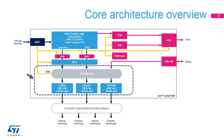One of the outputs of the Cortex-M4's bus matrix is the private peripheral bus, or PPB, which is internal to the CPU. It is used to access memory-mapped registers present in the NVIC, MPU, and debug units.